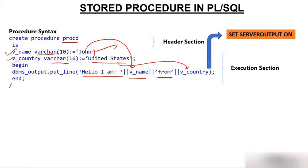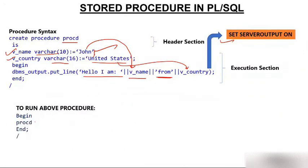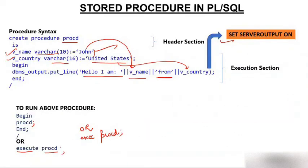One important point: in order to see the output, you have to run the command SET SERVEROUTPUT ON prior to the print line. This command is used for displaying output of DBMS_OUTPUT.PUT_LINE. To run the procedure, there are three methods. Method one: write BEGIN, then PROCD semicolon, then END and slash. Method two: write EXECUTE followed by the procedure name. Method three: write EXEC followed by the procedure name.